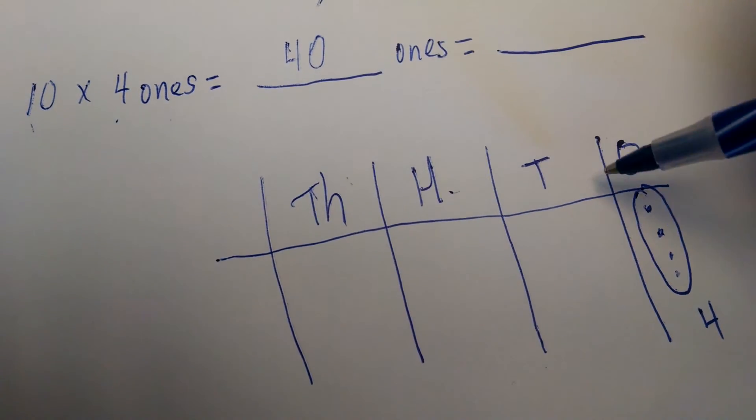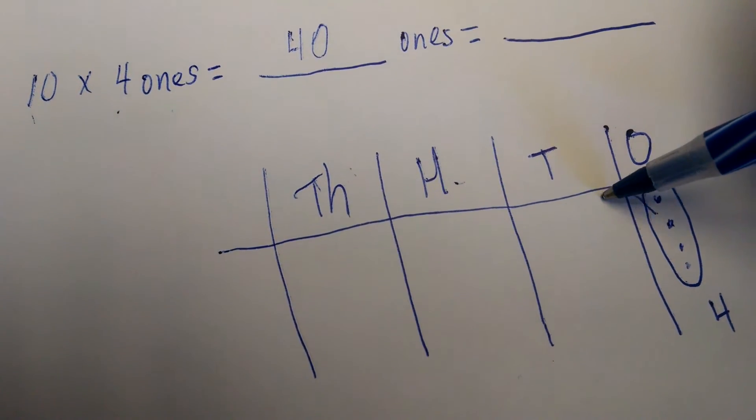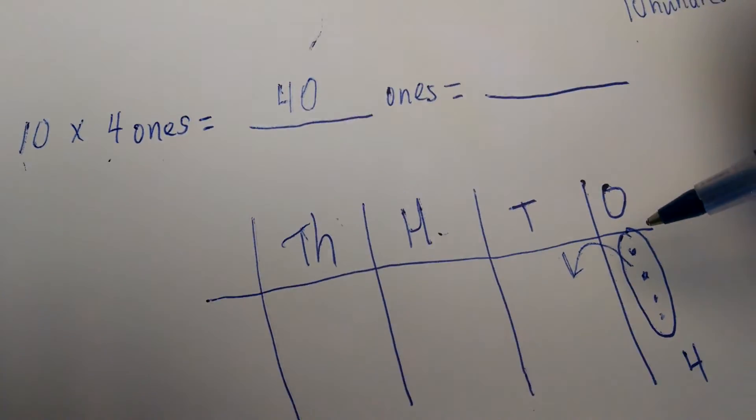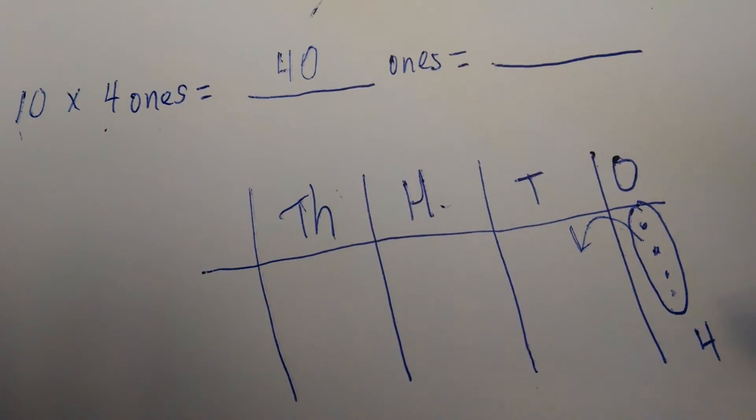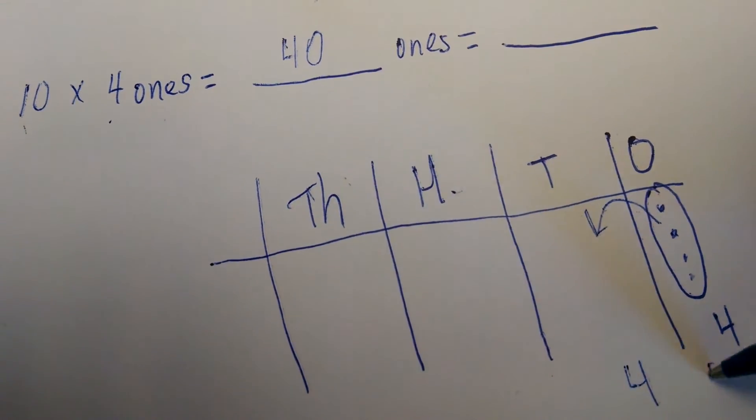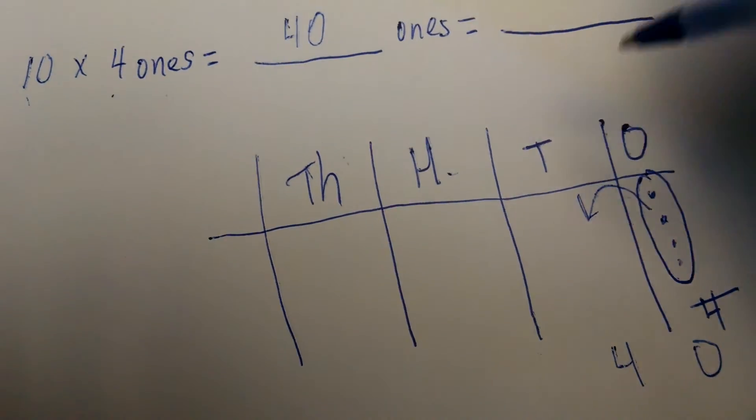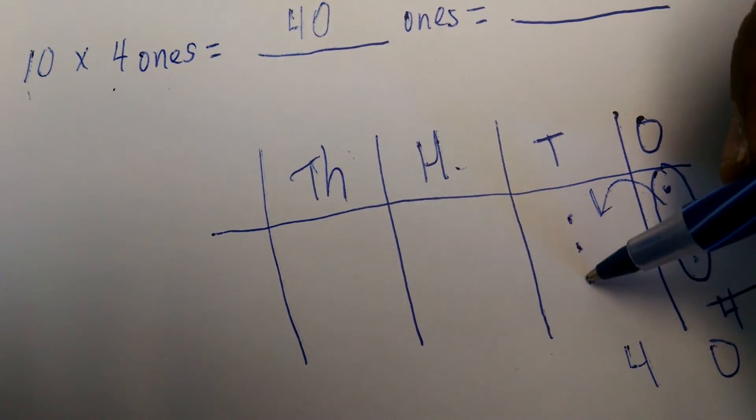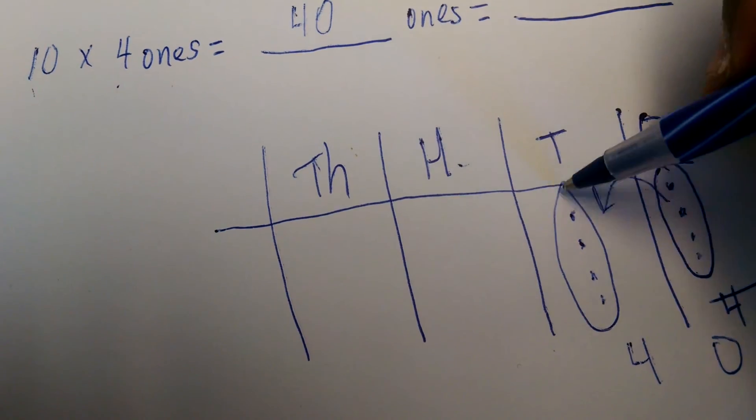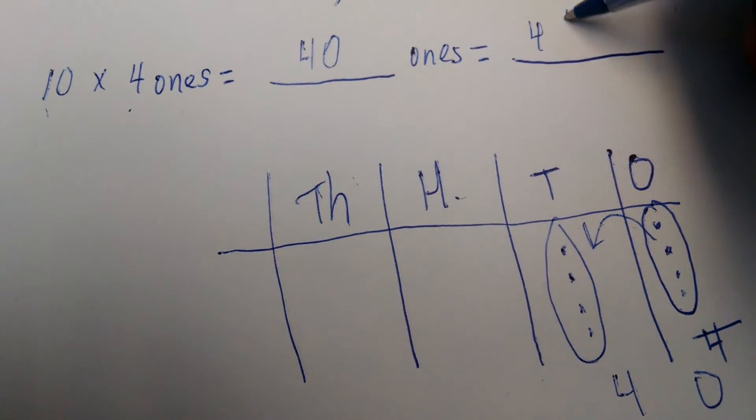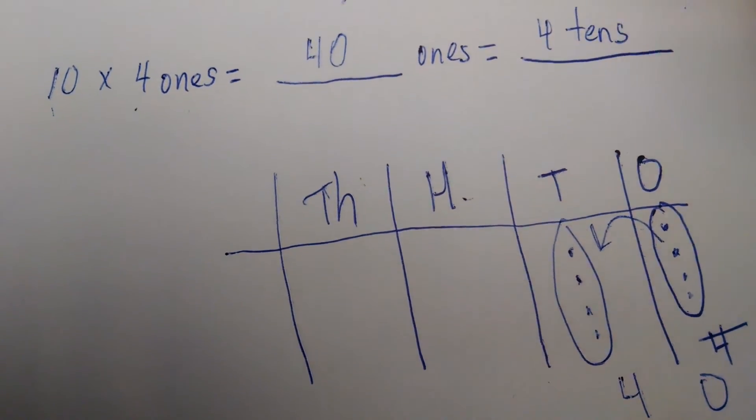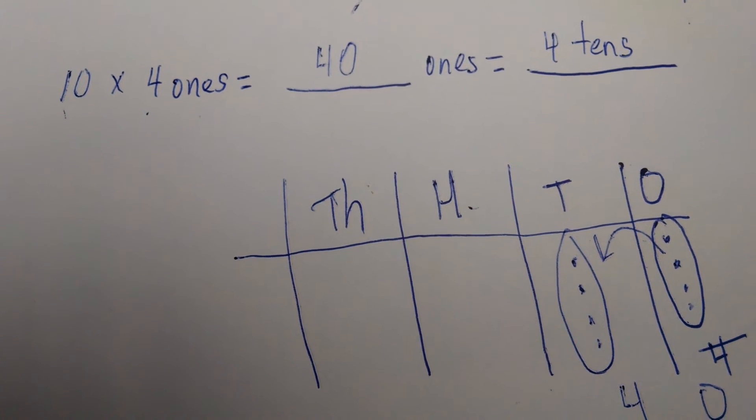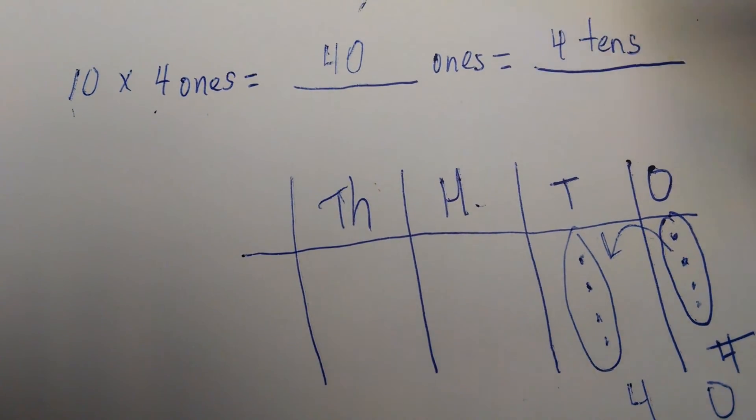Well, any time you have 10 of a unit, the digit jumps to the next place. So 40 ones, that's what we have now, is equivalent or equal to 4 tens. And this concept is very important to understand place value. 40 ones is equal to 4 ten-dollar bills.